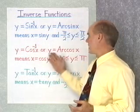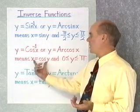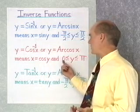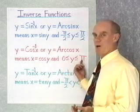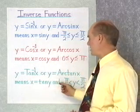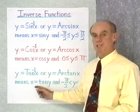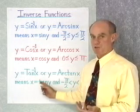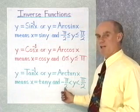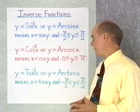Likewise, we have inverse cosine x, or arc cosine x. They both mean that x is equal to the cosine of y, and y is between 0 and pi. Then last, we have arc tangent x, or inverse tangent x. Arc tangent x means that x is equal to the tangent of y, and y is between negative pi over 2 and positive pi over 2.